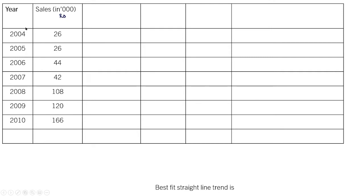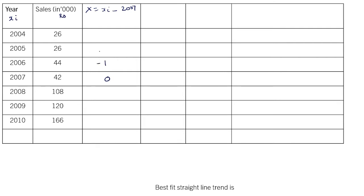The first step is to shift the origin. This is xi. We find x as xi minus the middle year. The number of years is 7, so we can take the middle year as the origin: xi minus 2007. As a result, 2007 gives 0, 2006 minus 1, 2005 minus 2, 2004 minus 3, 2008 gives 1, 2009 gives 2, and 2010 gives 3. As a result, summation x equals 0.